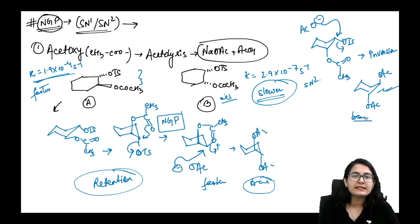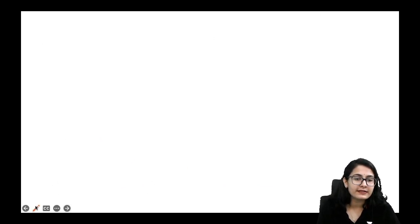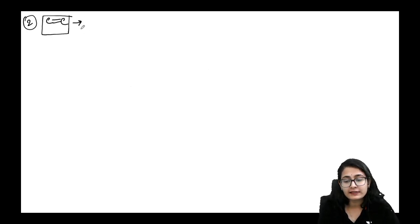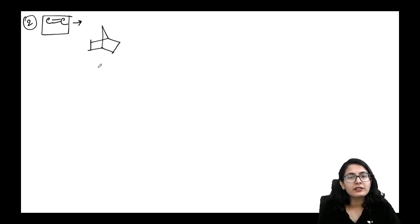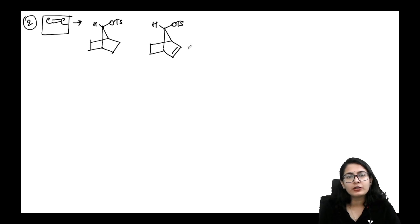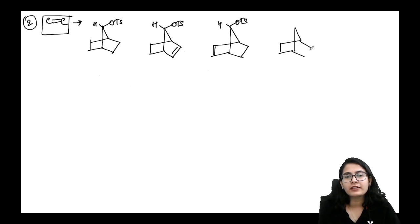So the first NGP example: the cis molecule gives inversion (slower), and the trans molecule gives retention (faster via NGP). Next example: a carbon-carbon double bond can also do NGP. We compare different molecules — one with no double bond, one with a double bond on the same side as OTs, one on the opposite side, and one with two double bonds.